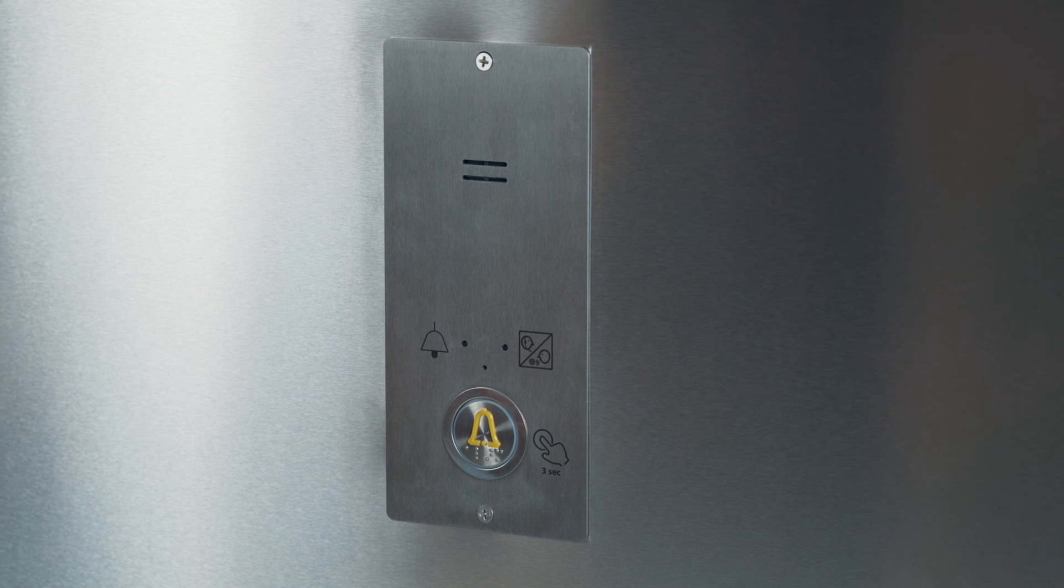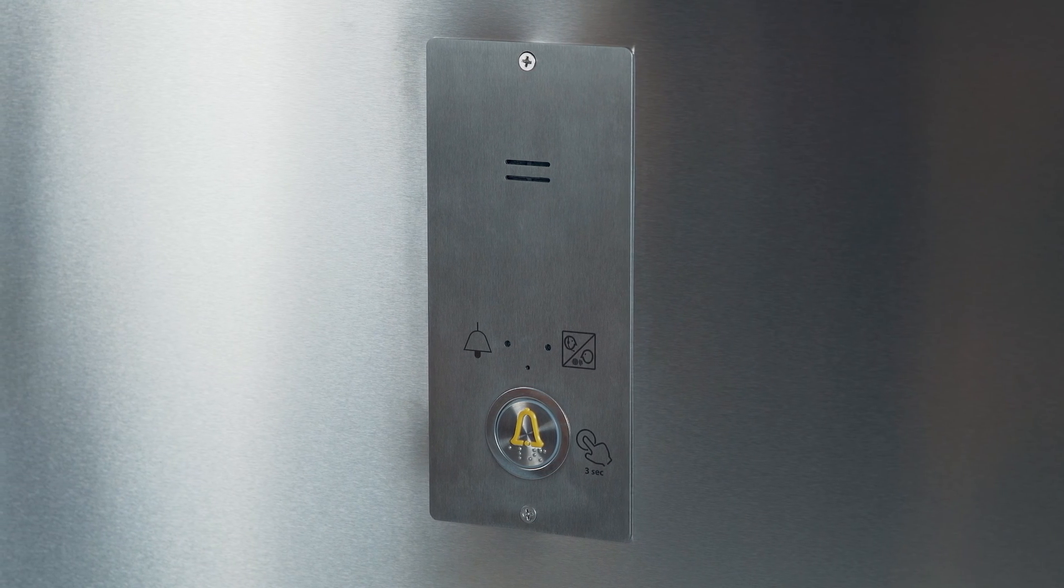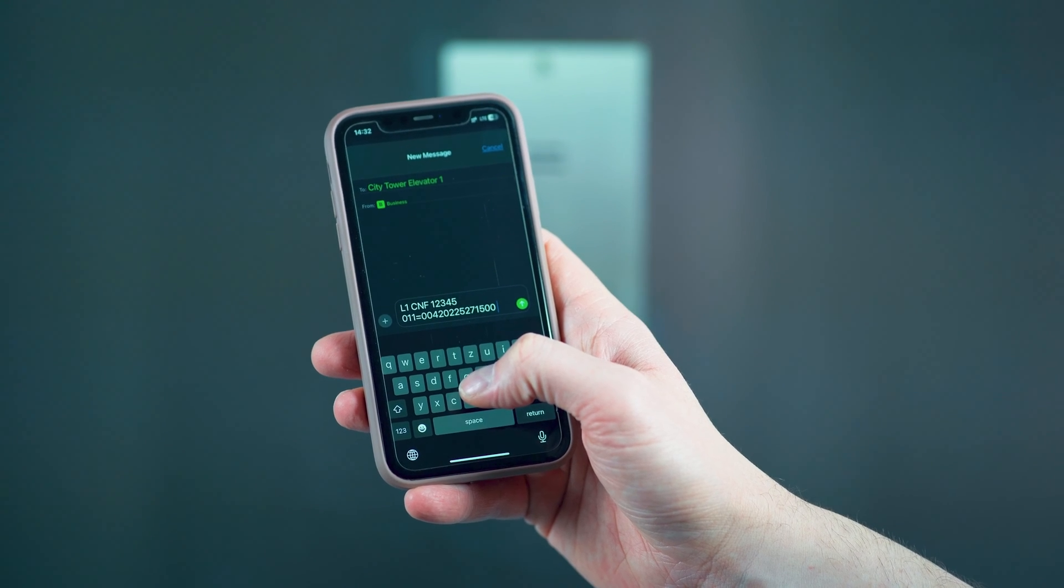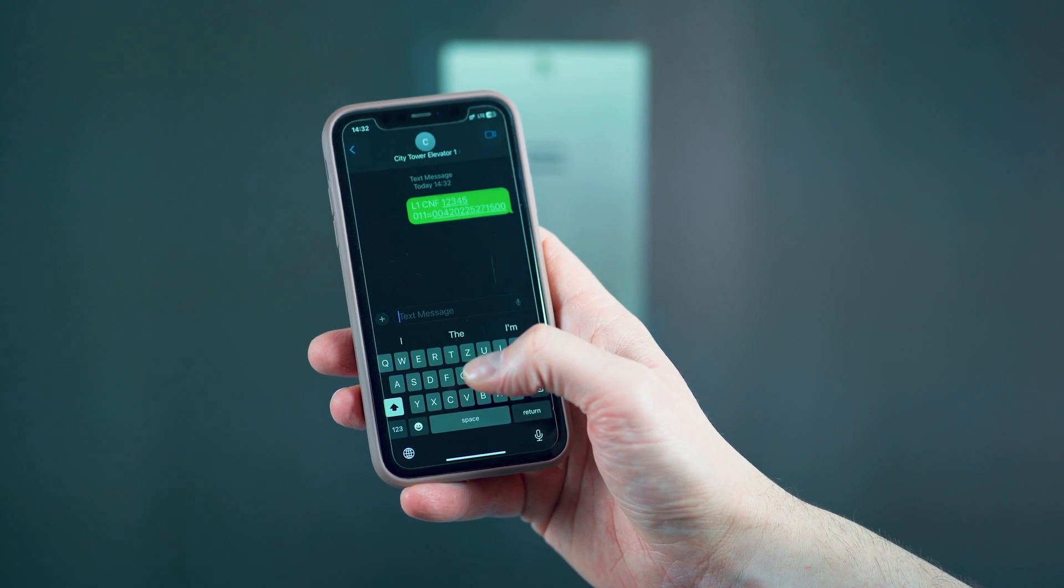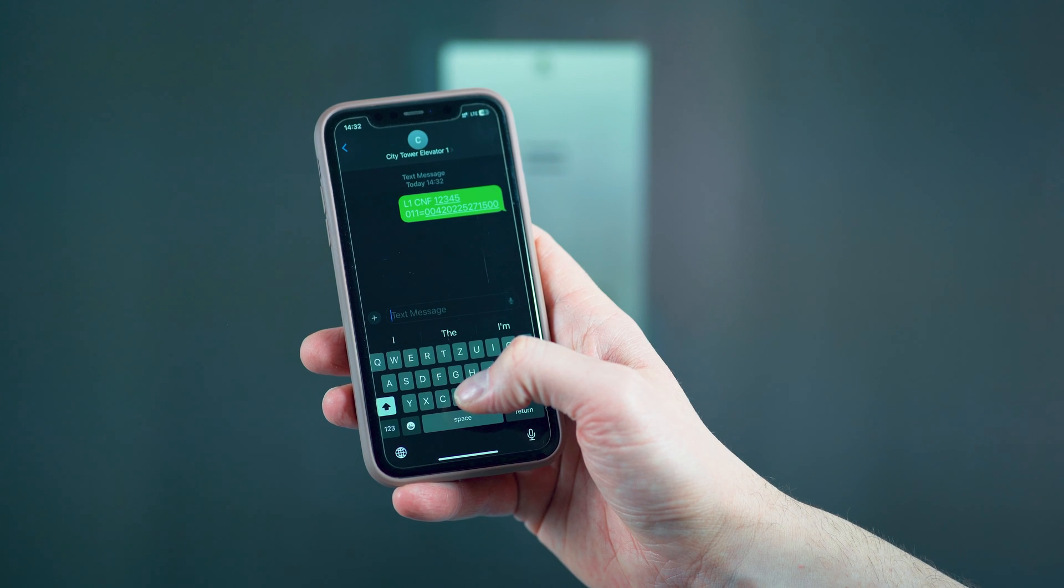Now, for the Lift 1. There are three ways to configure it. The first is via SMS. You simply send a message in the right format to the number of the SIM card in the 2N EasyGate IP. For example,